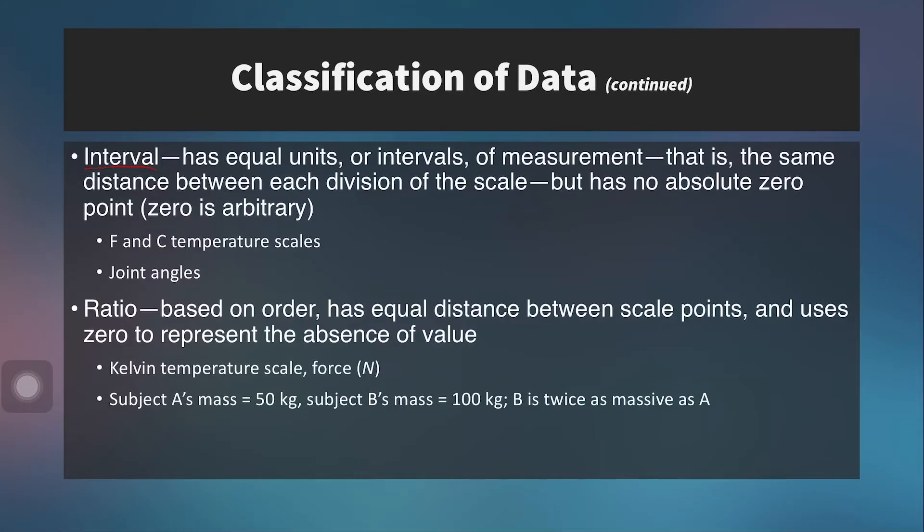An ordinal variable gives you a quantitative order but doesn't indicate how much better one score is from another. Going back to the marathon example: the place that runners finish — first, second, third — is an ordinal variable. It tells you the order but not the magnitude of the gap. If 99 couch potatoes and one elite Kenyan distance athlete ran the race, the Kenyan would be first and a couch potato second, but the ordinal data alone tells you nothing about how large that gap was.